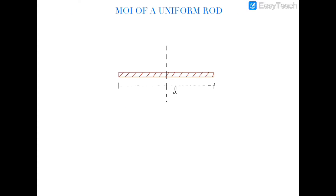To demonstrate this formula, let us find the moment of inertia of a uniform rod about an axis which is perpendicular to the rod and passes through its center of mass. Consider a small element of the rod with length dx at distance x from the axis of rotation. The mass of this element is dm, where dm = (m/L)dx.